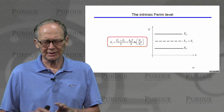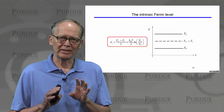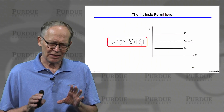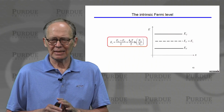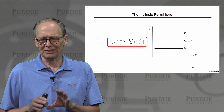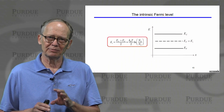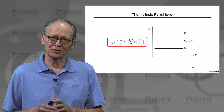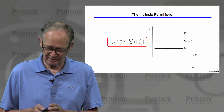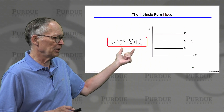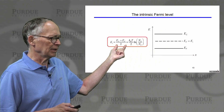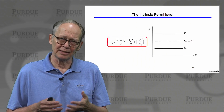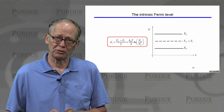We then asked: if we have an intrinsic semiconductor with an equal number of electrons and holes, where is the Fermi level? We expect it to be near the middle of the band gap, but not exactly in the middle because the electron effective mass and the hole effective mass are usually slightly different. That means the effective density of states for electrons and for holes are slightly different. We developed an expression showing that the intrinsic Fermi level is in the middle of the gap plus a correction that can be either positive or negative depending on the ratio of the hole and electron effective masses.